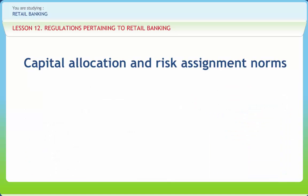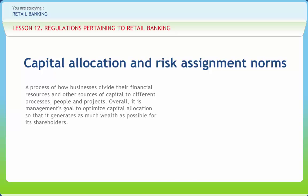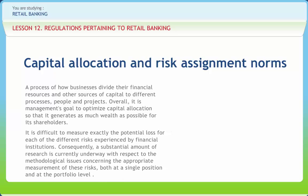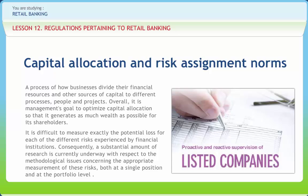The capital allocation and risk assignment norms given by the Basel Committee address the rigidities in the 1988 Capital Accord by evolving a comprehensive and risk-sensitive framework. Capital allocation is a process of how businesses divide their financial resources and other sources of capital to different processes, people, and projects. Management's goal is to optimize capital allocation to generate as much wealth as possible for shareholders. As capital is the most expensive source of funding, any change in capital allocation could translate into substantial savings or additional costs for banks. It is difficult to measure exactly the potential loss for each different risk, and substantial research is underway on appropriate measurement methodologies at both single position and portfolio levels.